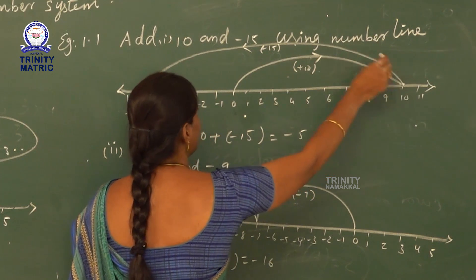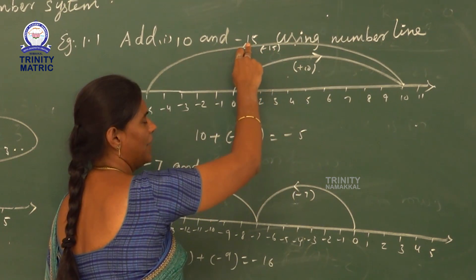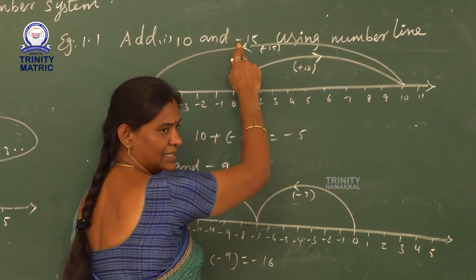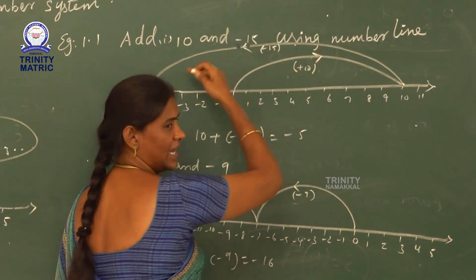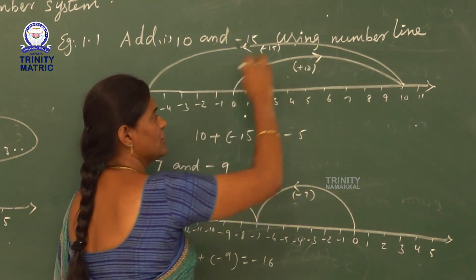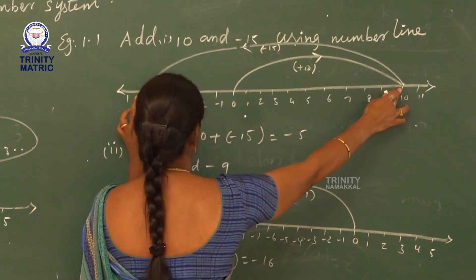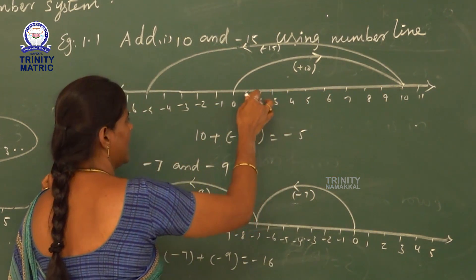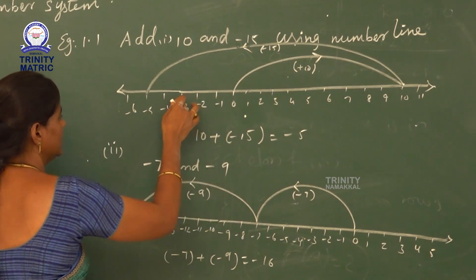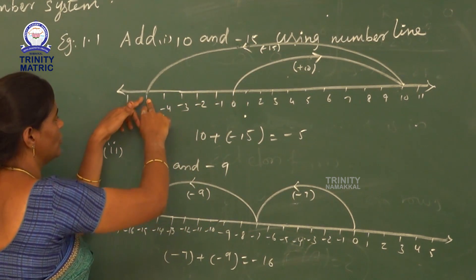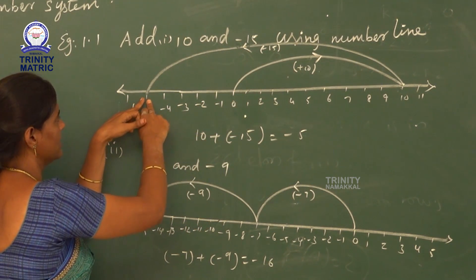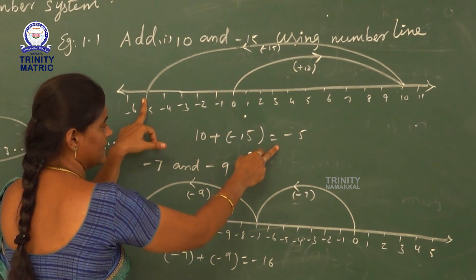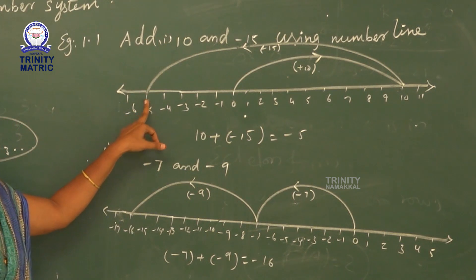Next integer is minus 15. The minus sign means we move to the left side 15 units. So from 10, we count 15 units to the left side: 1, 2, 3, 4, 5, 6, 7, 8, 9, 10, 11, 12, 13, 14, 15. The final answer is minus 5. So 10 plus minus 15 is equal to minus 5.